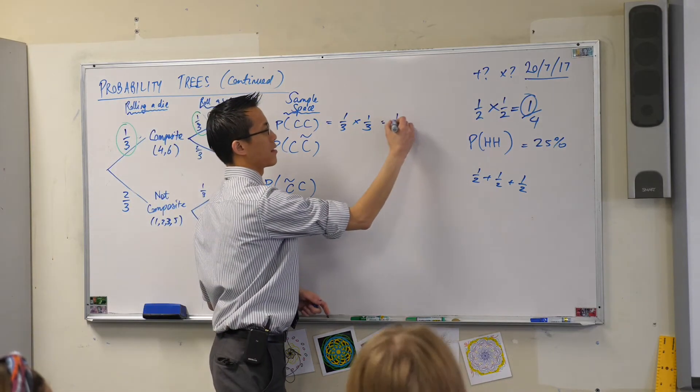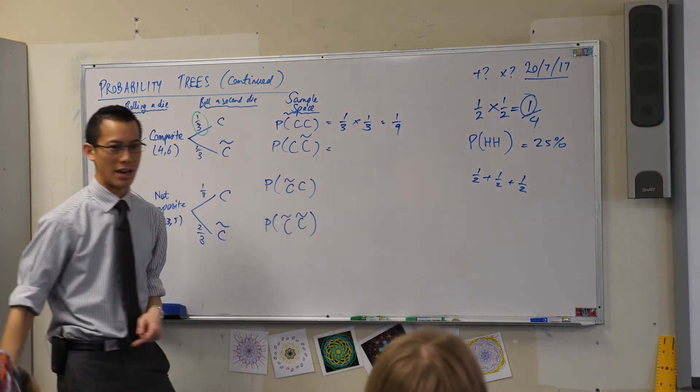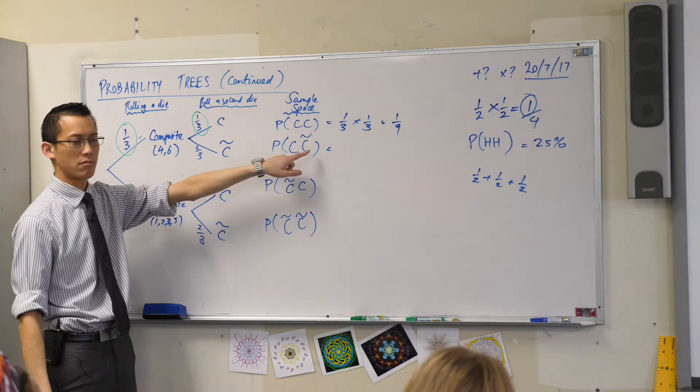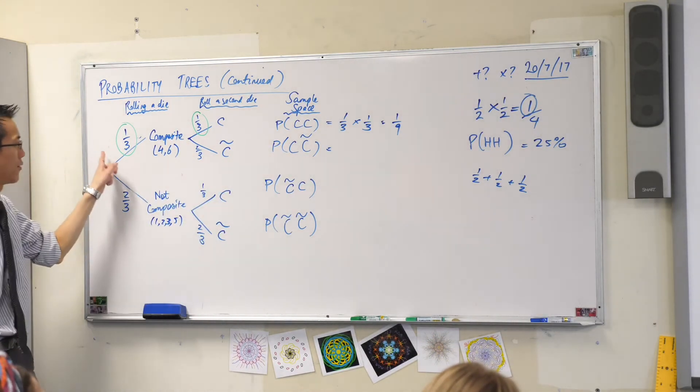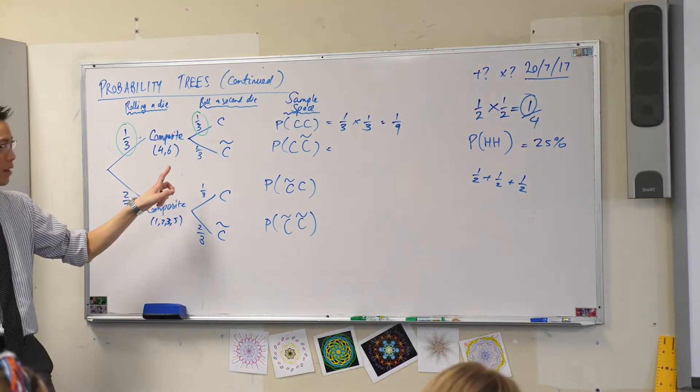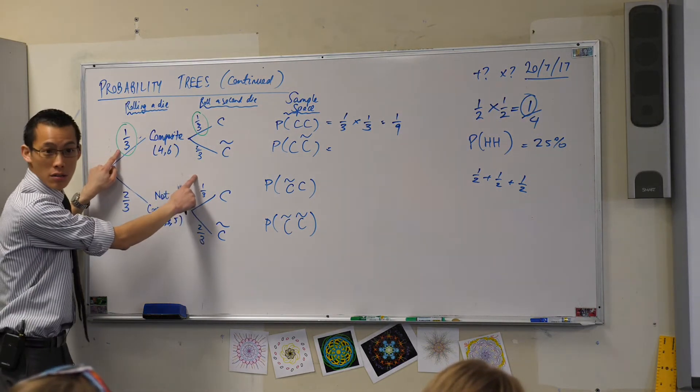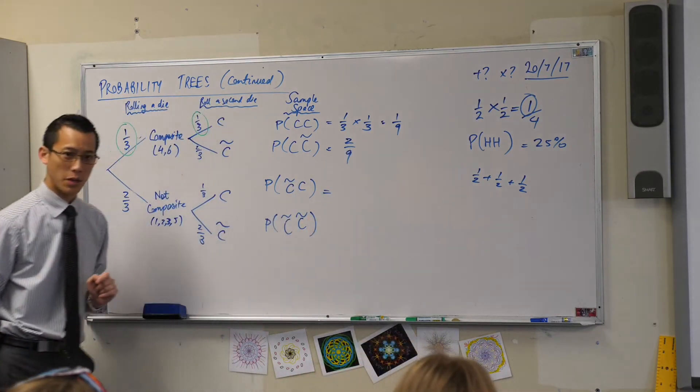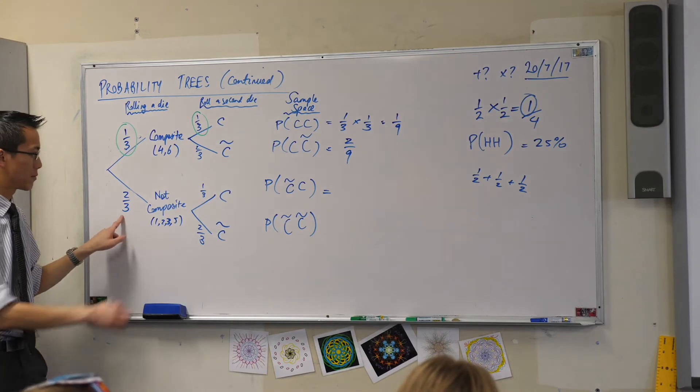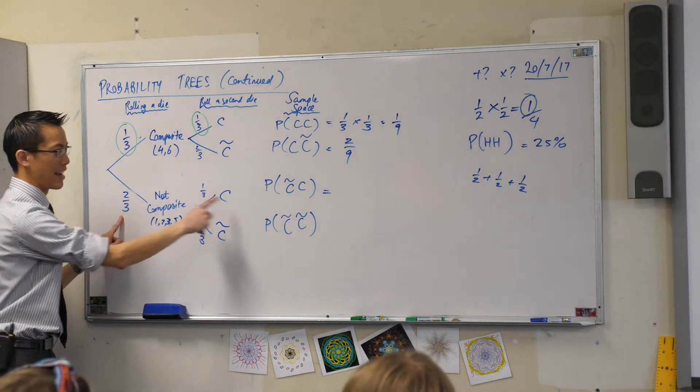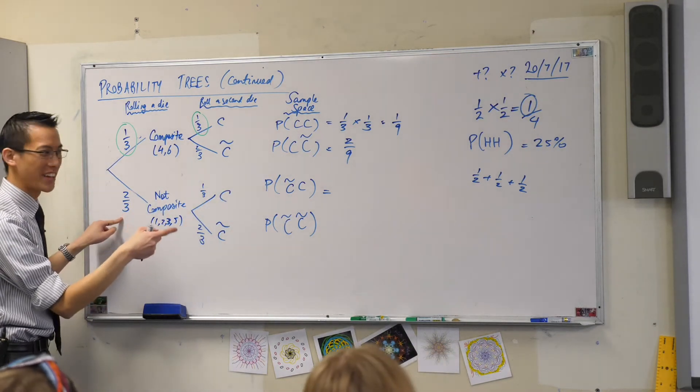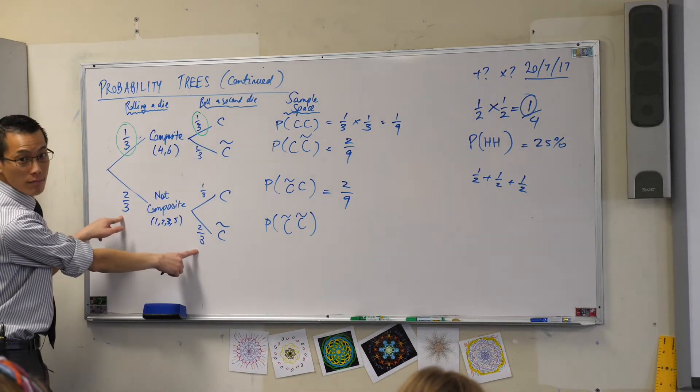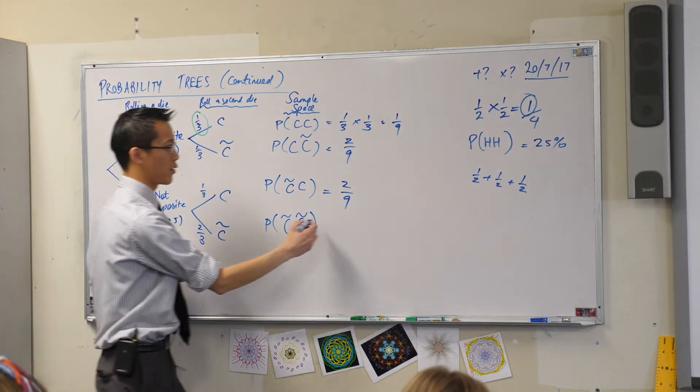That's going to be one ninth. I'm going to put equals signs across the page because I've run out of space. What's the probability of this? A composite then not a composite. Have a look. It's different, isn't it? A third times two thirds, two over nine. What about this one? Look at them across. Yeah, that's kind of important. That means something different. That's going to be two over nine again. And the very last one, that's four over nine, isn't it?